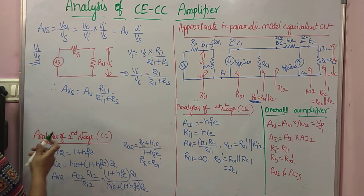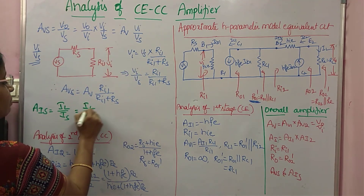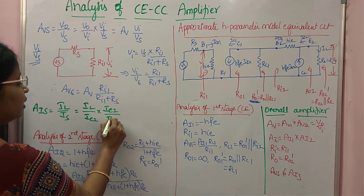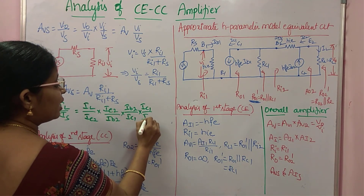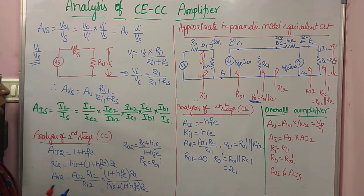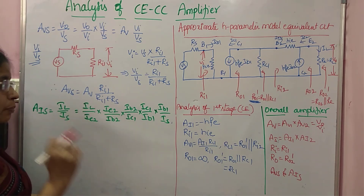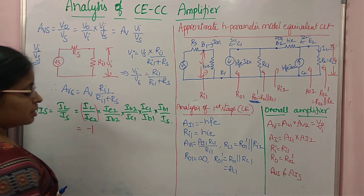AIS = IL / IS. Expanding step by step: AIS = (IL / IE2) × (IE2 / IB2) × (IB2 / IC1) × (IC1 / IB1) × (IB1 / IS). First factor: IL and IE2 are equal but in opposite direction, so IL / IE2 = −1. Second factor: AI2 = IL / IB2 = −IE2 / IB2, so IE2 / IB2 = −AI2.